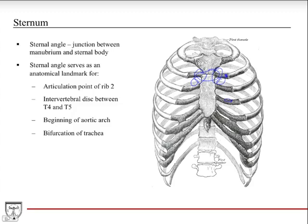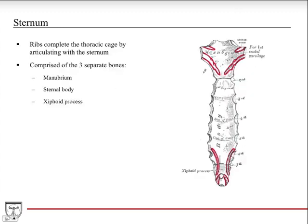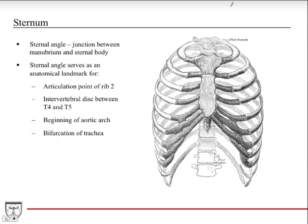The sternal angle is also the landmark for the intervertebral disc between T4 and T5 — it's not a landmark for either vertebra, but specifically for the disc in between. It also marks the boundary between the middle and superior mediastinum, which we'll talk about in subsequent lectures.